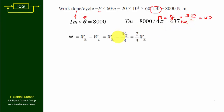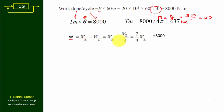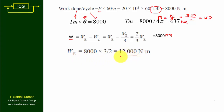Total work done equals work done during expansion minus work done during compression. Since compression work is one-third of expansion work, total work equals W_e minus W_e/3 equals (2/3)·W_e. We know total work done equals 8000 Newton meters, so W_e equals 8000 × 3/2 equals 12000 Newton meters.